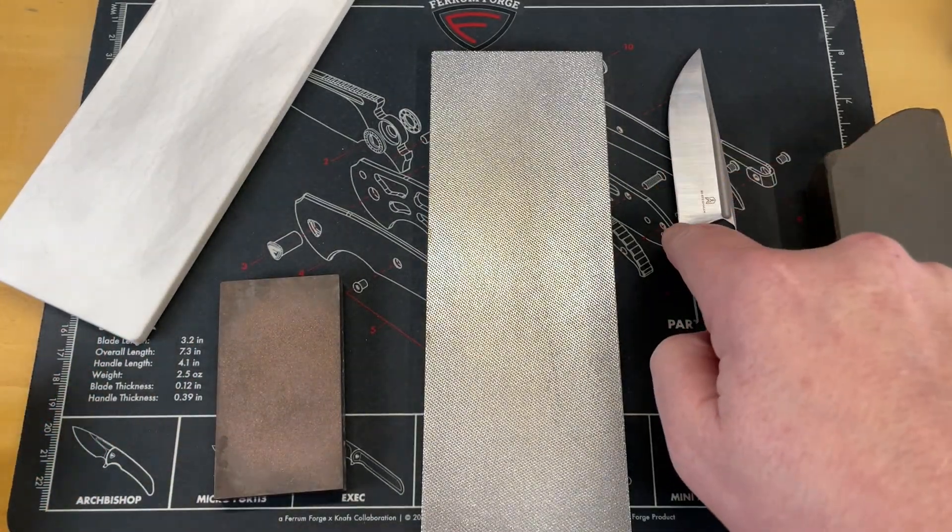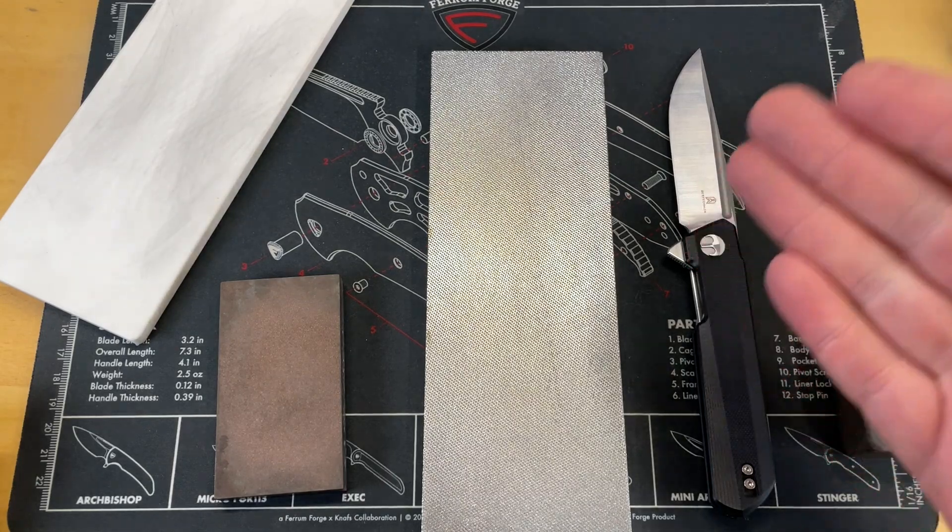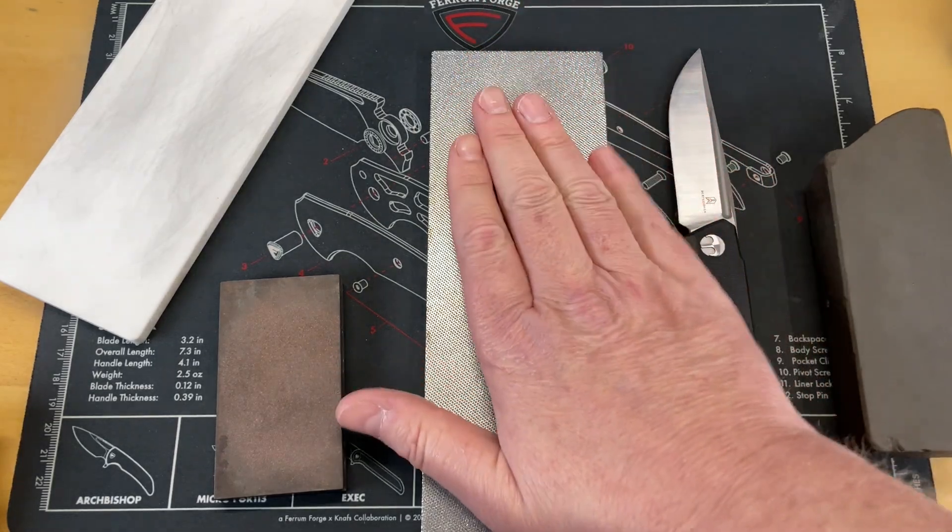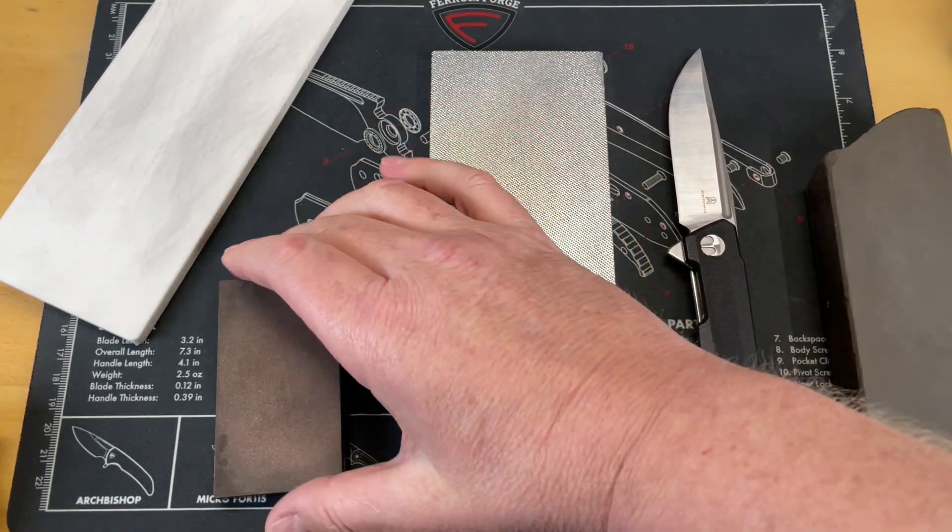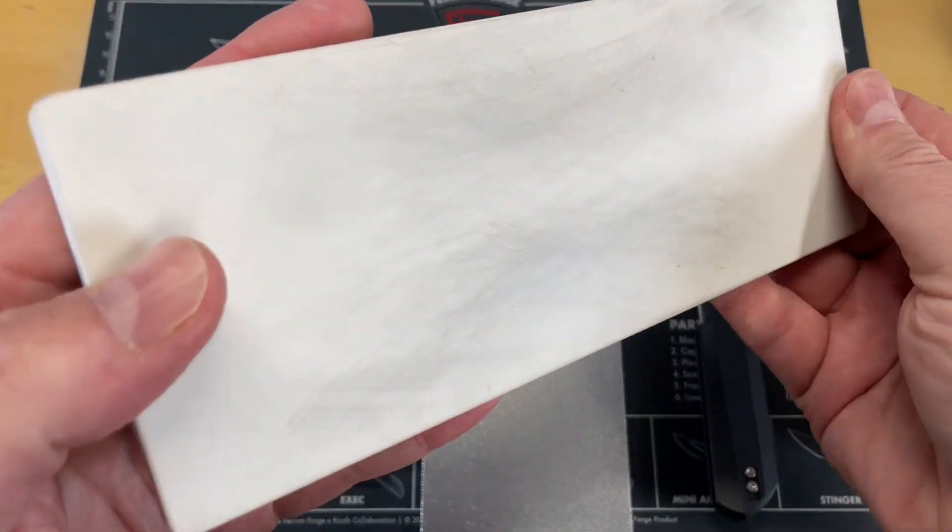The other thing you have to think is how hard is the steel? What's the material? How hard is it going to be for me to use something like an aluminum oxide, which you can use on a lot of steels, but it's not as aggressive. A lot of times you're going to want to work with something that's going to cut a lot more aggressively and then finish on something that's going to give you a finer edge.